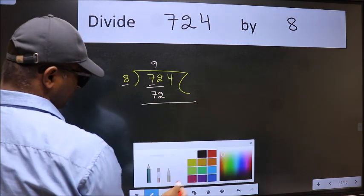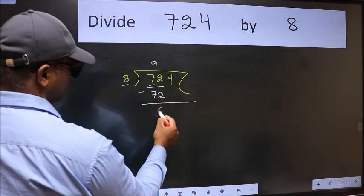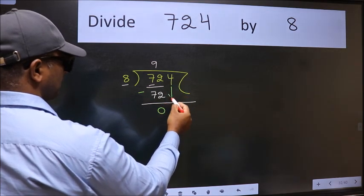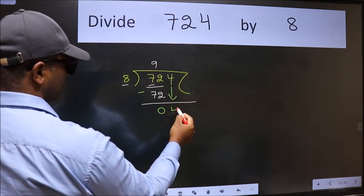Now we should subtract. We get 0. After this, bring down the beside number. So, 4 down.